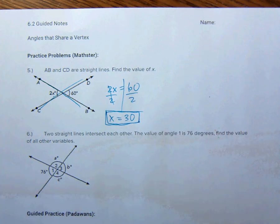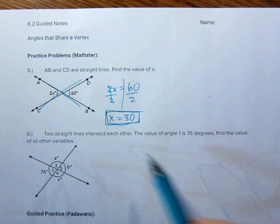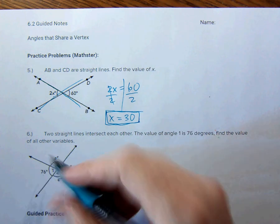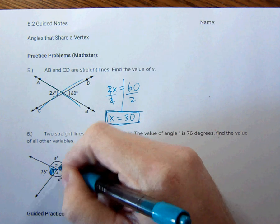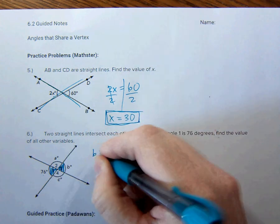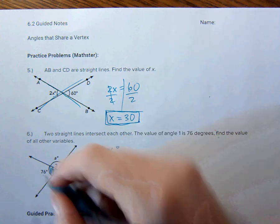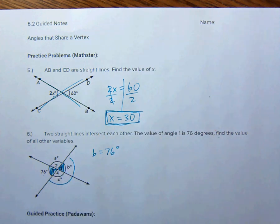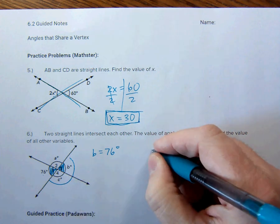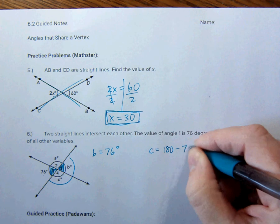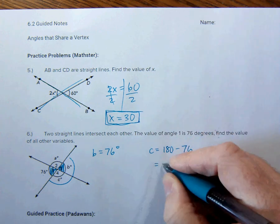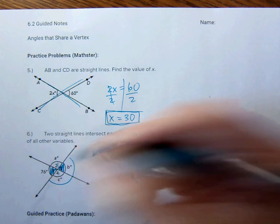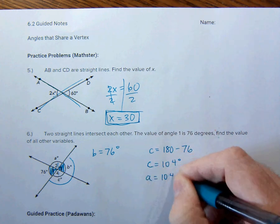This one right here, probably also easy. Two straight lines meet. Finding the angle one is 76 degrees. Find the value of all the other variables. So if this is 76, this is vertical to this right here. So that means that b is equal to 76 degrees. Awesome for us. Now, a and c are going to be equal, but also, we could say, you know, this right here, that's a, that's a line. That's a 180 degrees. So c is going to be equal to 180 degrees minus 76, which that is 104 degrees. So c is 104 degrees. And also, you know, c and a, they're vertical. So that means that a is also 104 degrees.